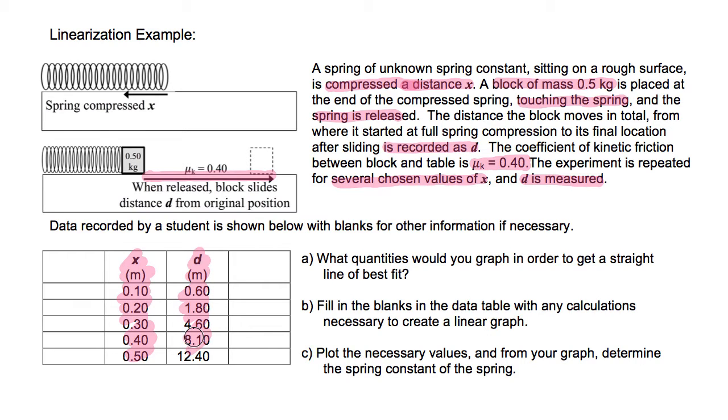Here's the problem. What quantities would you graph in order to get a straight line of best fit? Then they're going to have us fill in these blanks in the data table with any calculations necessary to create a linear graph. Finally, we're going to plot those values and from the graph determine the spring constant of the spring, which is going to be represented by k. That's what we're trying to figure out, the spring constant. All right, let's take this one step at a time.